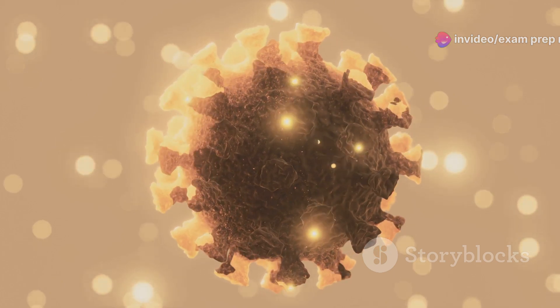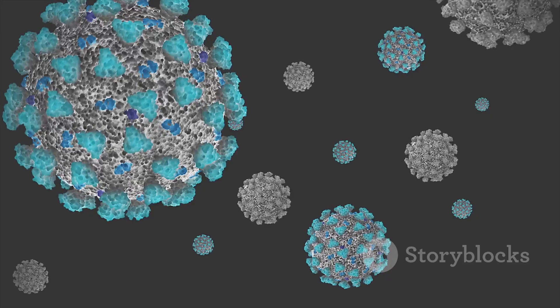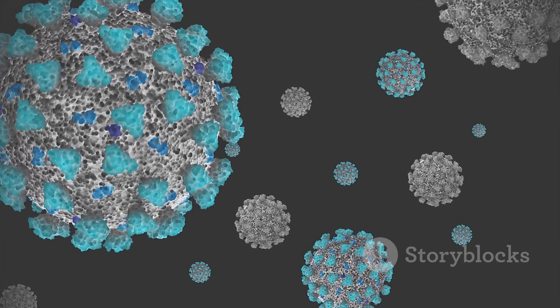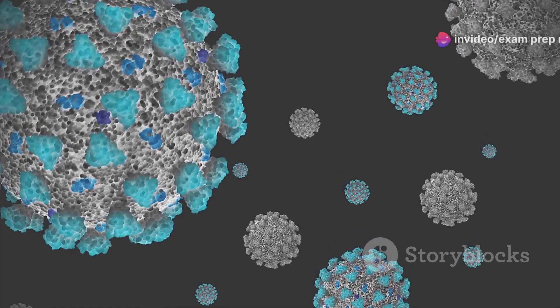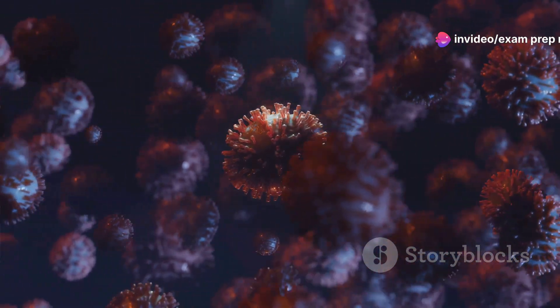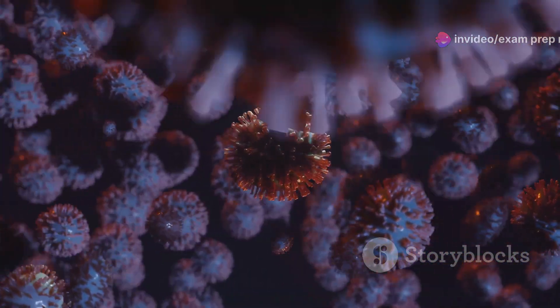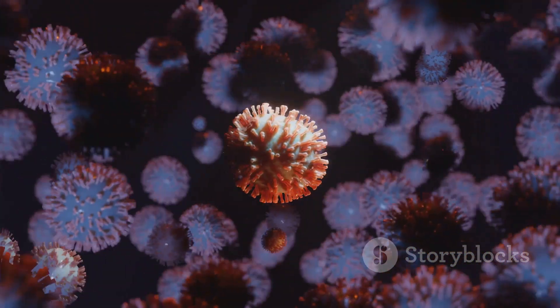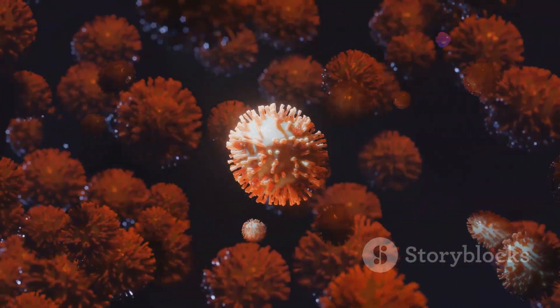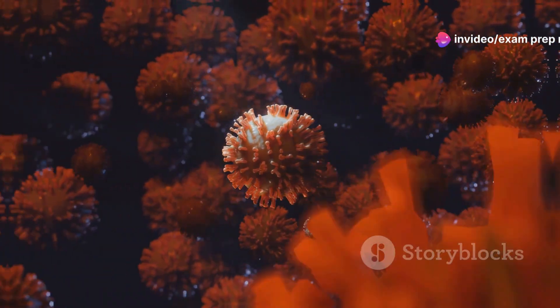Assembly: The newly synthesized viral components self-assemble into new virus particles. This process can occur in the cytoplasm or nucleus of the host cell, depending on the type of virus. Finally, the newly assembled viruses are released from the host cell, often killing the cell in the process. These new viruses can then go on to infect other cells, continuing the cycle of infection.